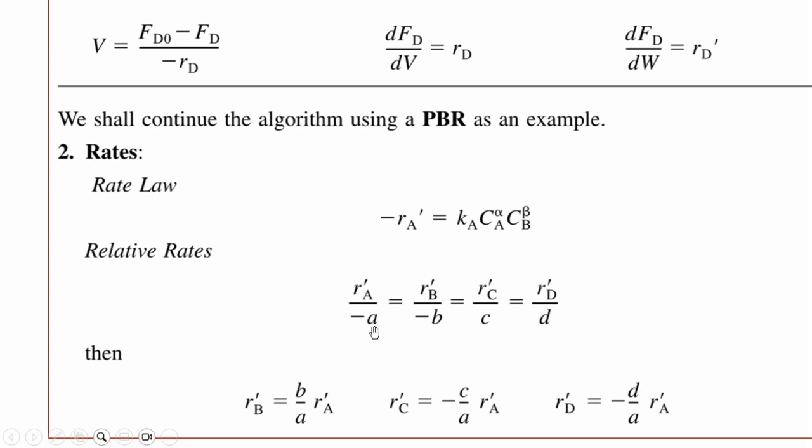Then relative rates: rate divided by its stoichiometric coefficient, so rA'/(-a) = rB'/(-b) = rC'/c = rD'/d. Or we can say rB' = (b/a)·rA', rC' = -(c/a)·rA', and rD' = -(d/a)·rA'.